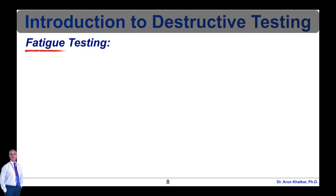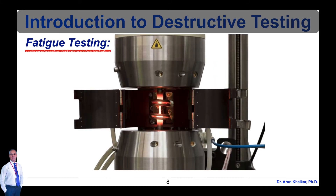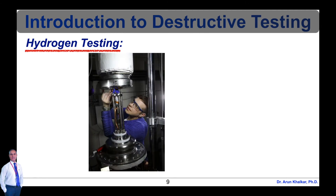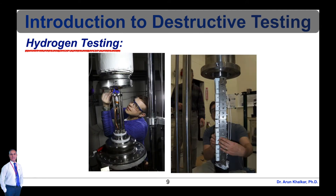Next is fatigue testing. Performed in air or seawater environments, these tests are used to test parent materials and the endurance of welded joints under constant or variable amplitude loading. This destructive testing method can be used for fatigue crack growth testing of welds, base metals, and heat affected zones. Next is hydrogen testing, which covers materials that have a risk of corrosion from exposure to hydrogen, and can be carried out at a variety of different temperatures and strain rates.